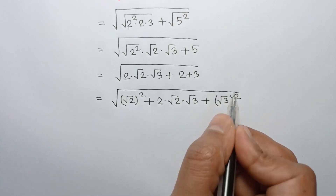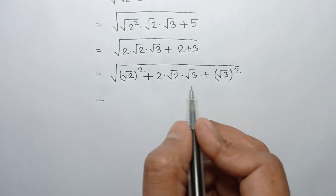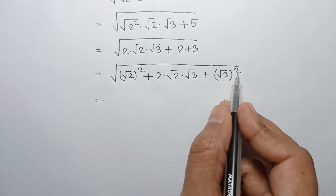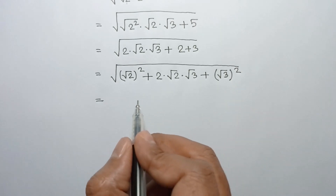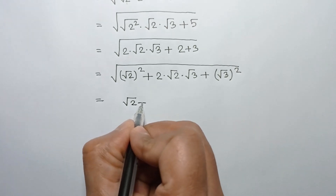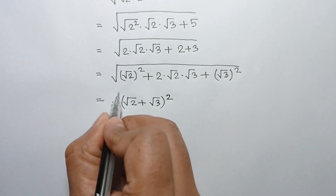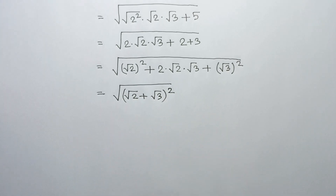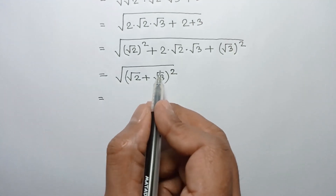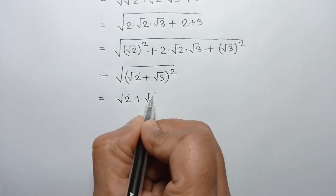This is in the form of the formula a squared plus 2 times a times b plus b squared equals a plus b whole square. So it can be written as square root of 2 plus square root of 3 whole square. Therefore the result is square root of 2 plus square root of 3.